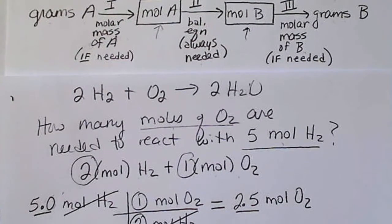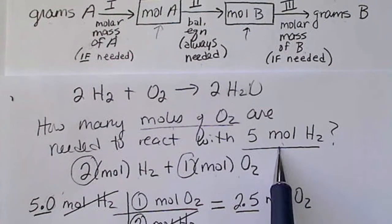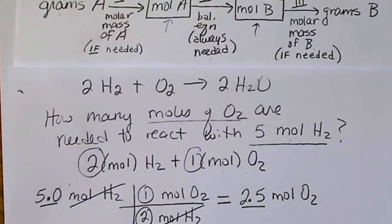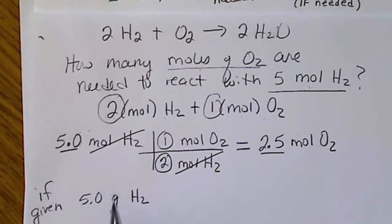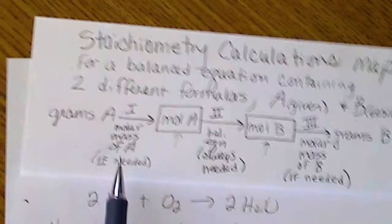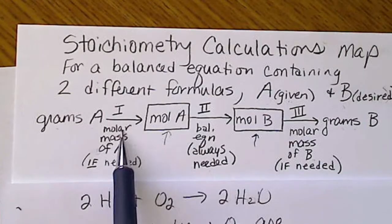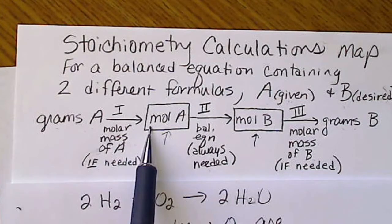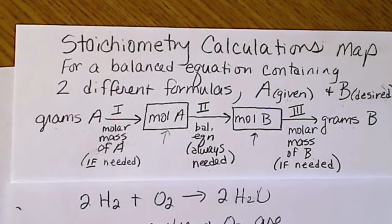If we were given the mass of hydrogen, for example five grams of hydrogen, so if that was our given, then we would have, if we're given grams, that's when we have to do step one, going from grams of hydrogen to moles of hydrogen.